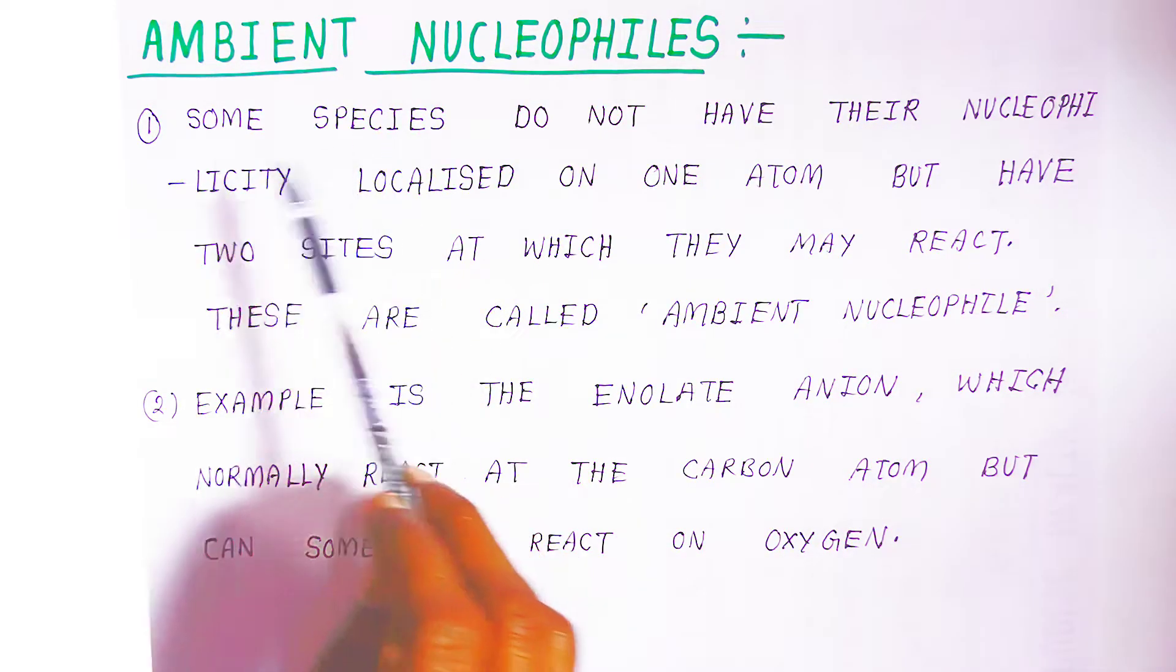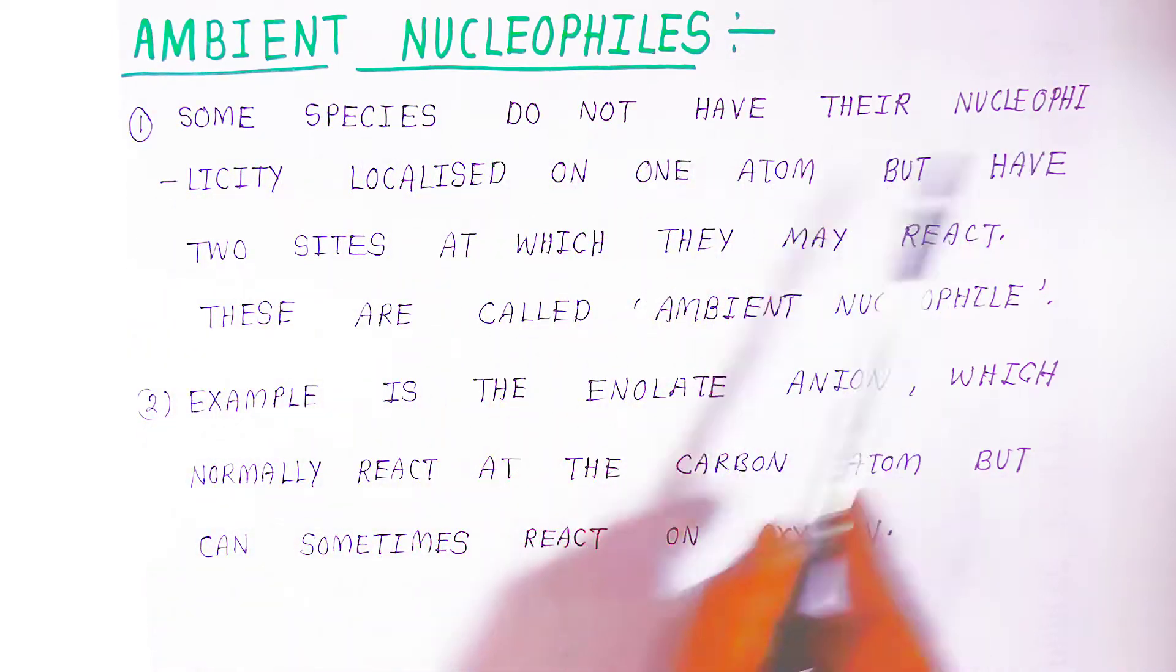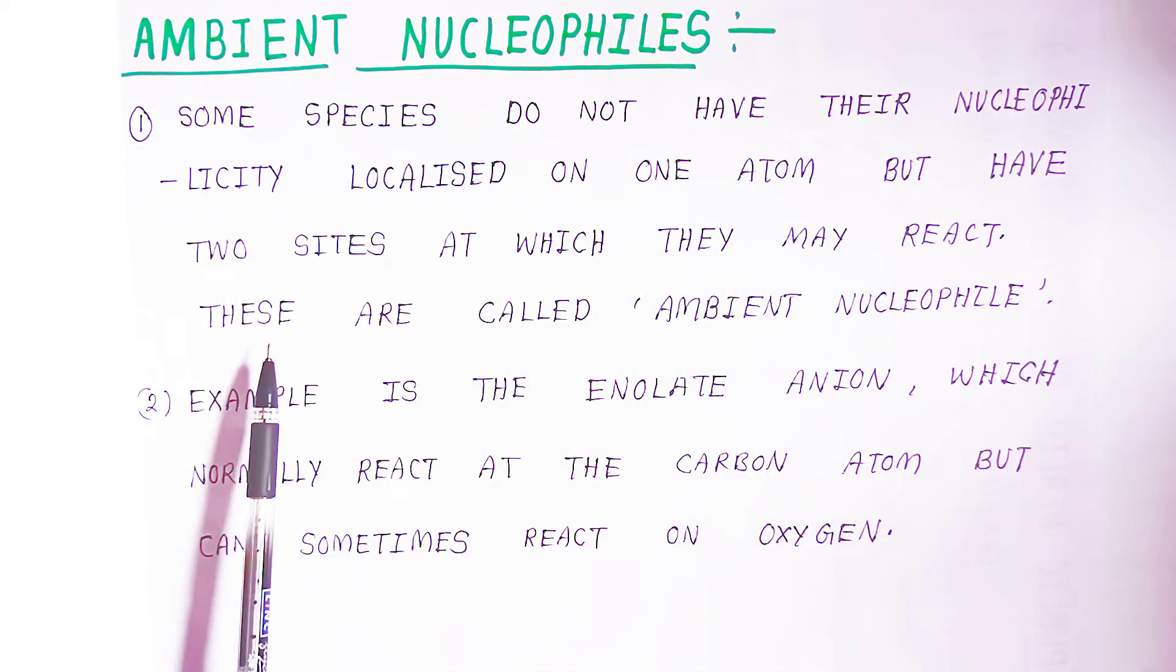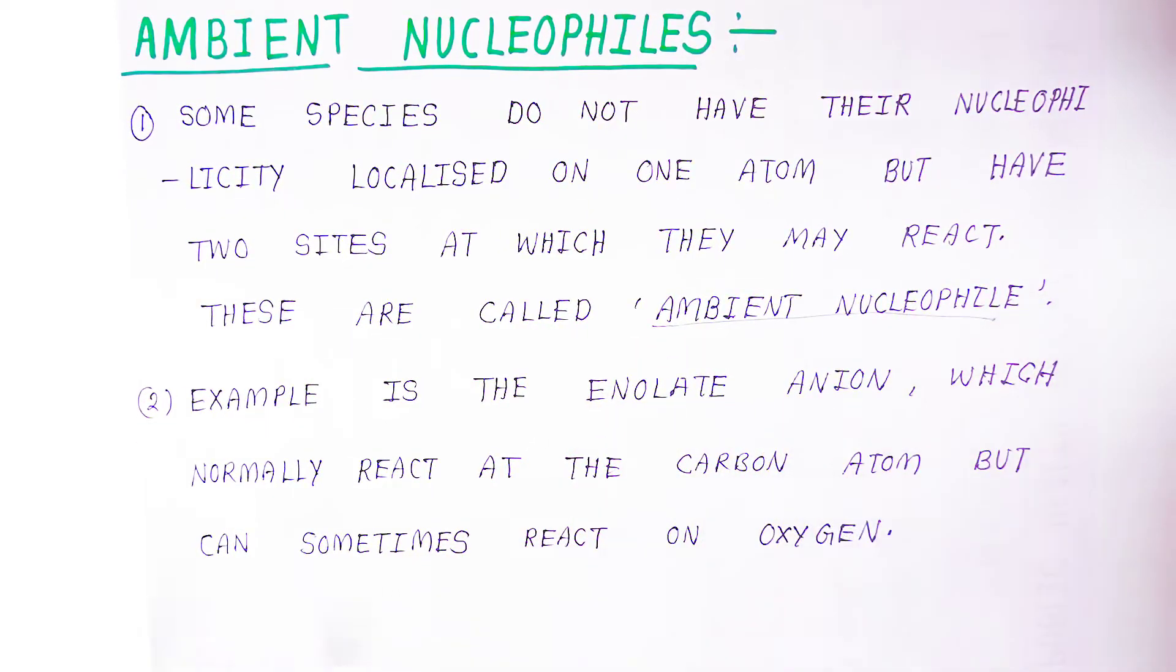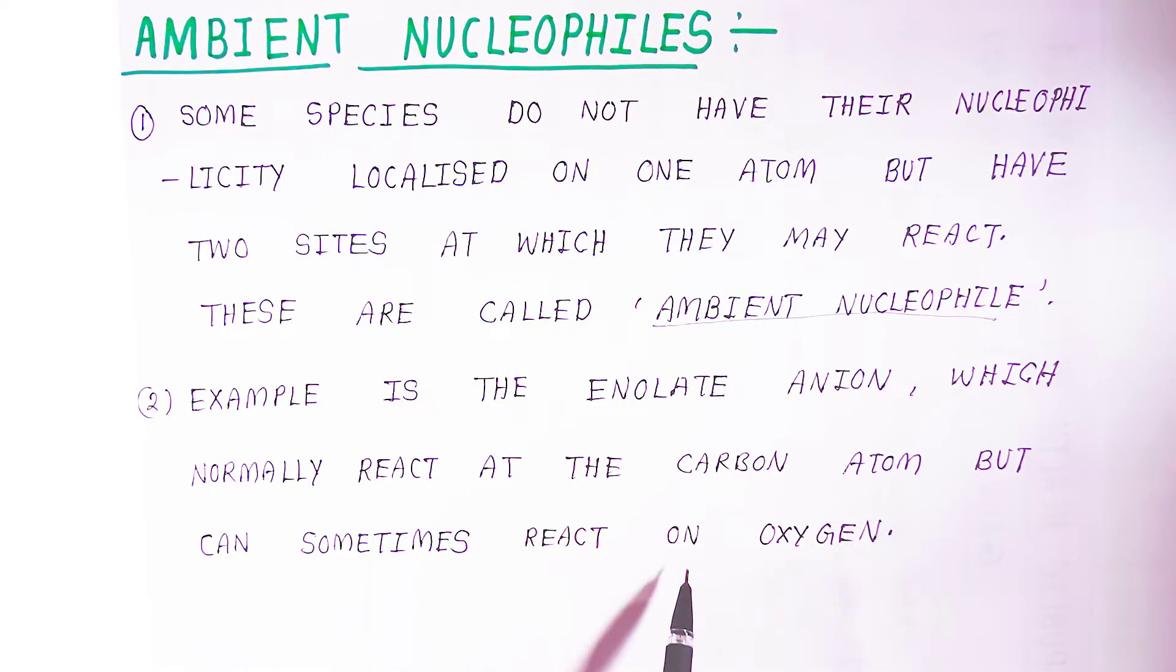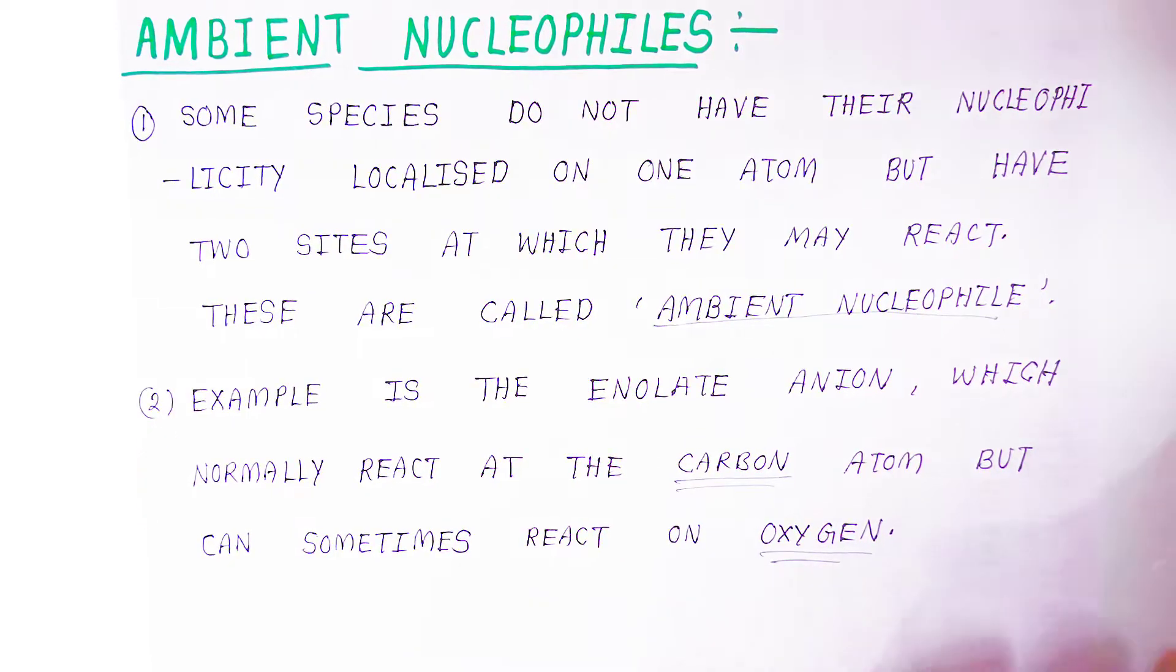These are the differences between nucleophilicity and basicity. Now we are going to see one more concept - ambient nucleophilicity. Some species do not have their nucleophilicity localized on one atom but have two sites at which they may react. These are called ambient nucleophiles. Example is enolate ions which normally react at the carbon atom but can sometimes react on oxygen.